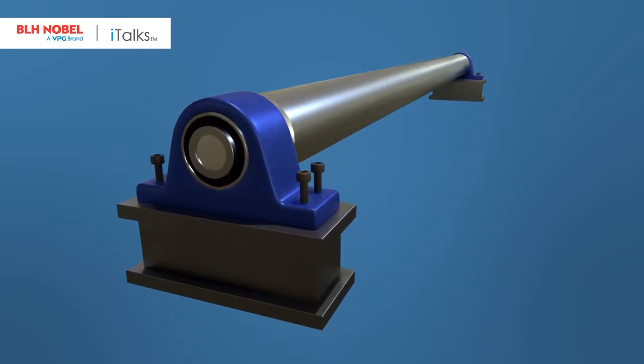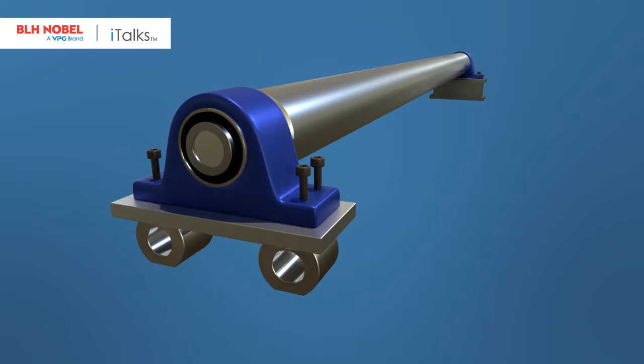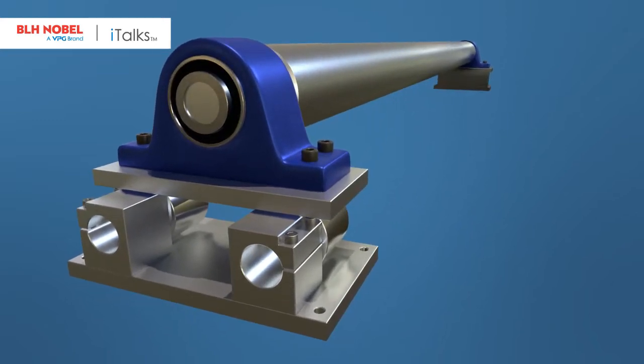One major FMU advantage is that it's built using standard KISS load cells that can be replaced easily and at much lower cost than competing web tension units.